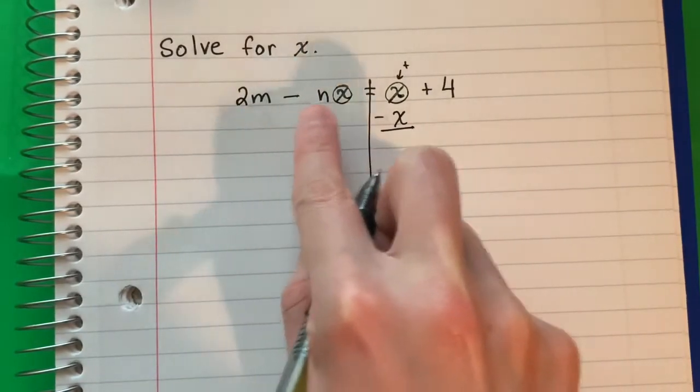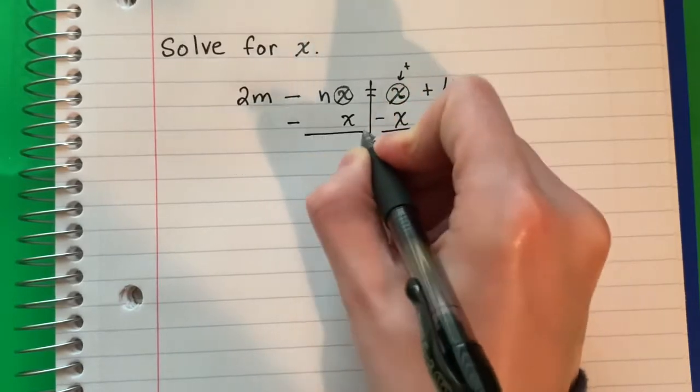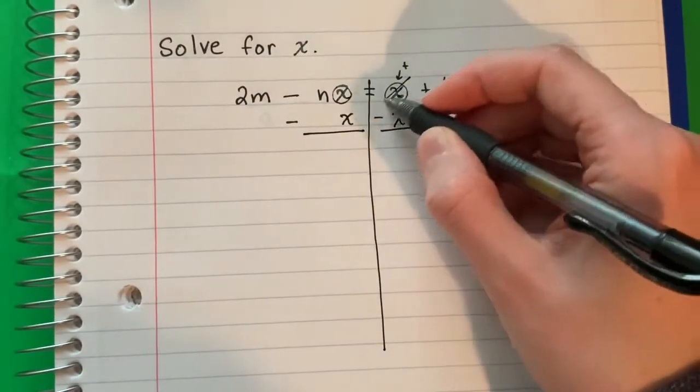I'm going to put x with x, so minus x. x minus x cancels out.